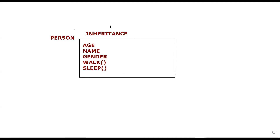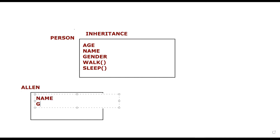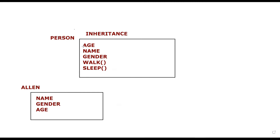Now I create one more class for Alan. Alan will also have name, gender, age, and so on. Inheritance says that if you have created a class and declared some variables and properties in it and you wish to use those in another class, you can inherit those properties. This concept is called inheritance.